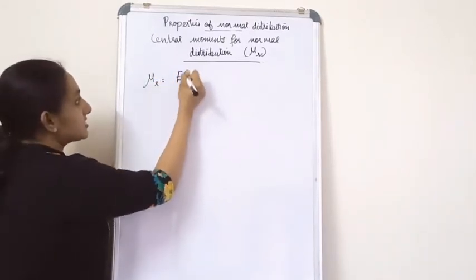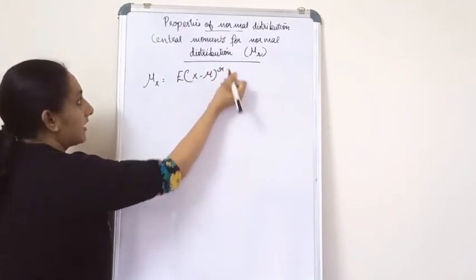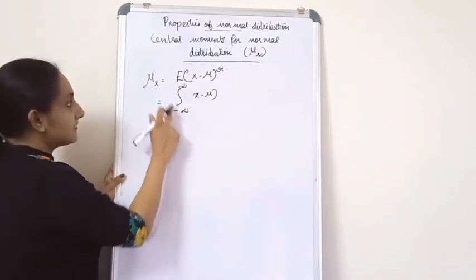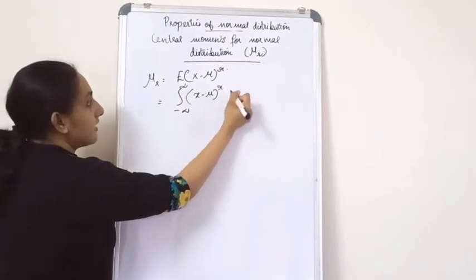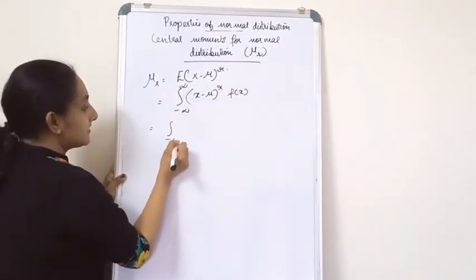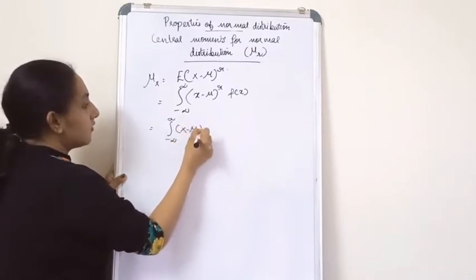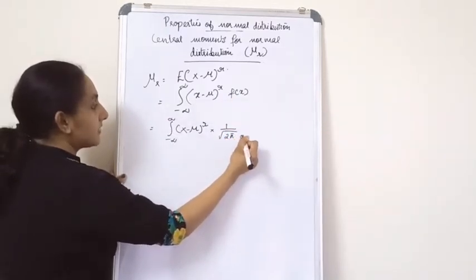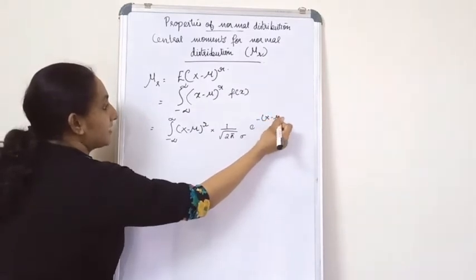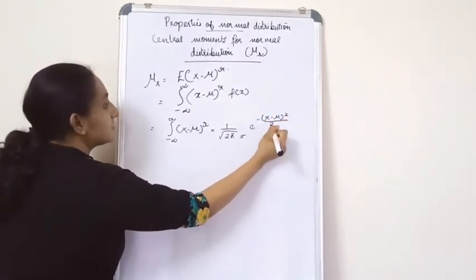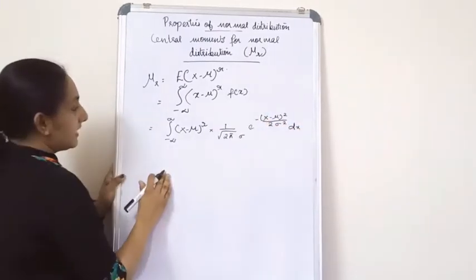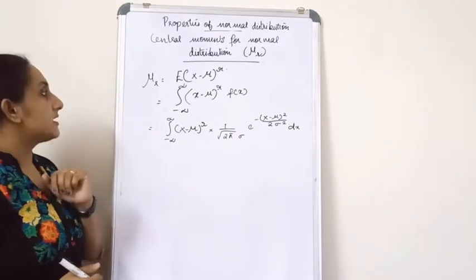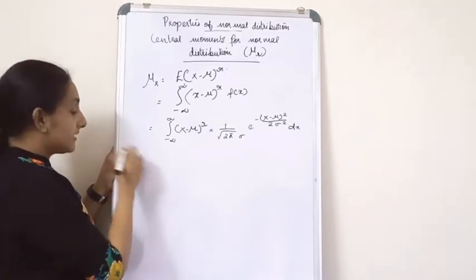Mu_r is equal to the expectation of x minus mu the whole raised to r. In this case, it is the integral minus infinity to infinity of x minus mu the whole raised to r, multiplied by the density function: 1 by root 2 pi sigma, e raised to minus x minus mu the whole square divided by 2 sigma square dx. This is mu_r of the normal distribution.